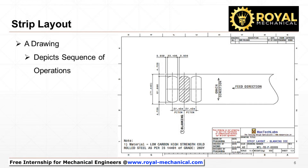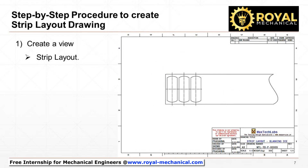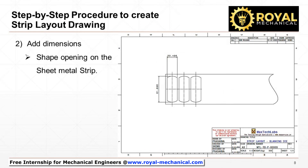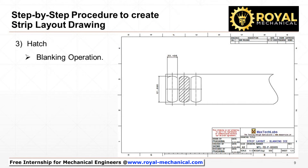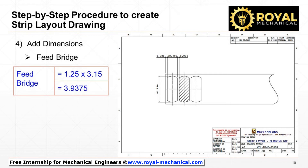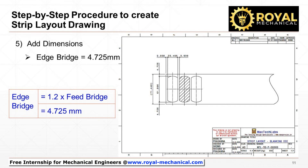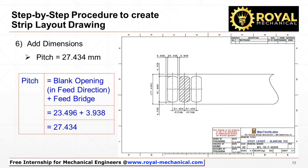Now I will explain the step-by-step procedure to create the strip layout drawing. First, create a view of the strip and add the shape opening dimensions on the sheet metal strip view. Then hatch the shape opening area where the blanking operation is performed. Next, add the dimension of the feed bridge. Next, add the dimension of the edge bridge and the strip width. Next, add the dimension of the pitch.